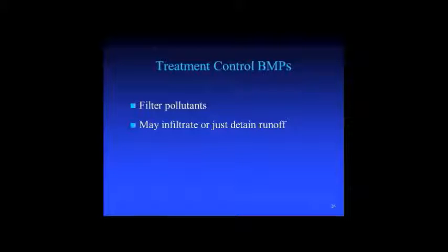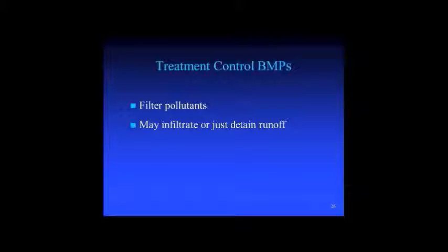Treatment control BMPs are used where you can't achieve simple infiltration into the ground. The difference is that infiltration — like permeable pavement — usually infiltrates the amount of rainfall that falls directly on that pavement. A treatment control BMP receives water from a concentrated source like a rooftop or parking lot. Treatment control BMPs serve two purposes: they filter pollutants, and they also have capacity to either infiltrate or detain runoff for a while. Detaining runoff means keeping it there and metering it out.